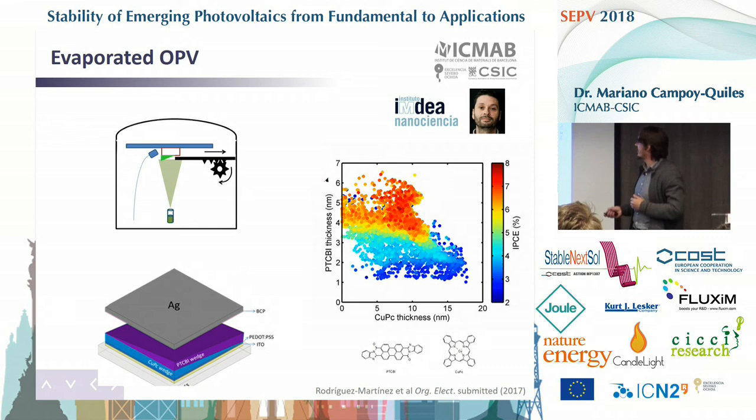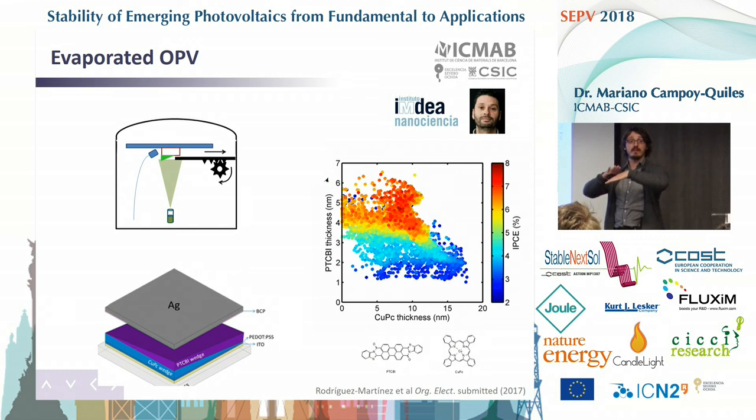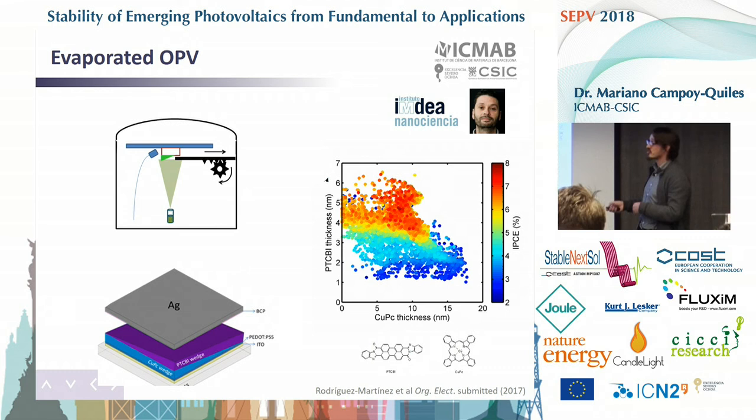We have extended all of the Raman modeling to also look at bilayer structures. In this case the layers are evaporated, and what we do is a double orthogonal gradient of the layer underneath and the layer on top. This case is for copper phthalocyanine and PTCBI. From this bilayer structure we map again with Raman to obtain the thicknesses of the two layers, and with LBIC we get the photocurrent map, and then we can identify the optimum thickness for each of the two layers.